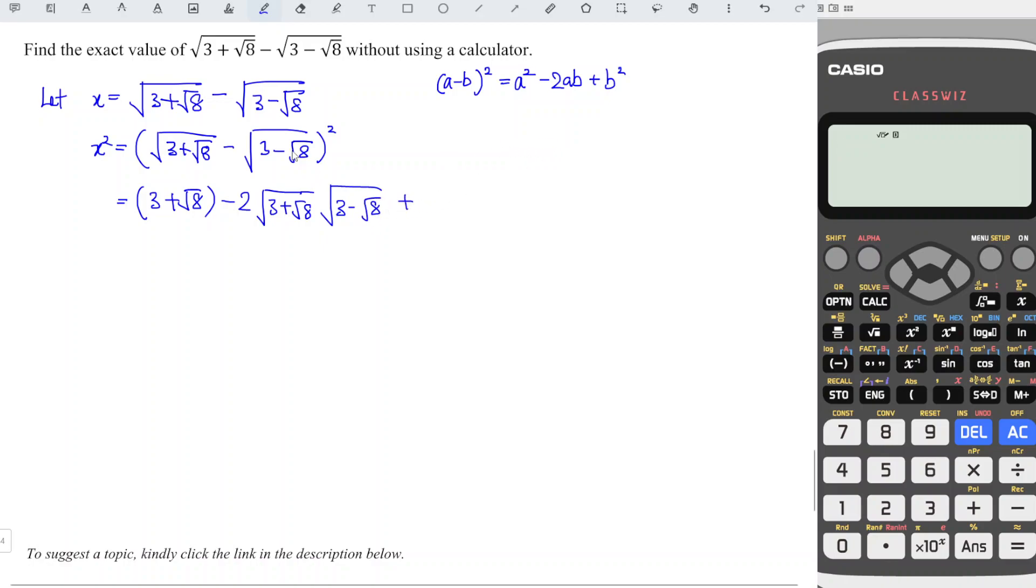Then we plus b². Square and square root cancel each other, so we're left with only 3-√8.